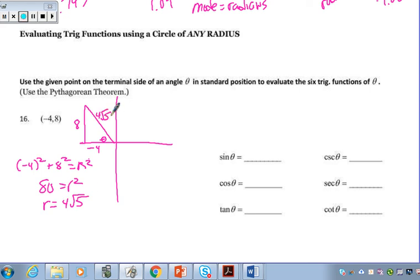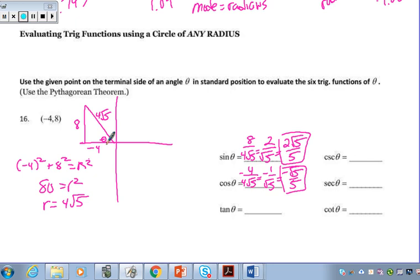To find the sine, that's going to be the opposite side over the hypotenuse. So, it's going to be 8 over 4 square roots of 5. That simplifies to 2 over the square root of 5. And then, rationalized, we have 2 root 5 over 5. If I'm looking for cosine, that's the adjacent side over the hypotenuse. So, it's negative 4 over 4 root 5. The 4 is canceling and leaving it as negative 1 over root 5. And then, again, rationalizing negative root 5 over 5. So, the final answers are here and here. Tangent is opposite over the adjacent. That's going to leave us with negative 2.